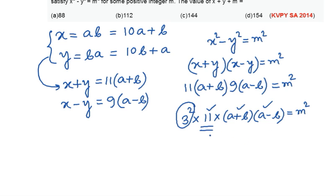So 11 is a prime number. So we need to make sure that either the factor (a + b) or the factor (a - b) is providing me another 11 so that this 11 can be clubbed with that 11.